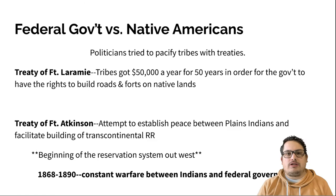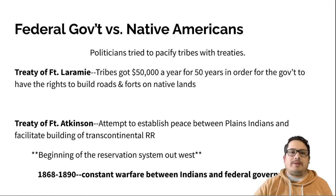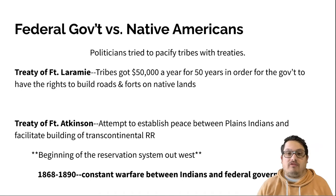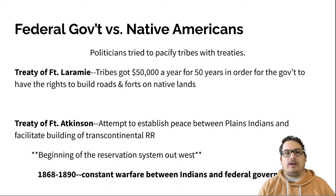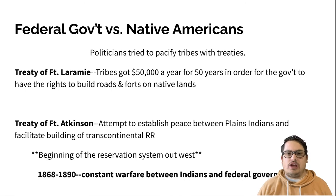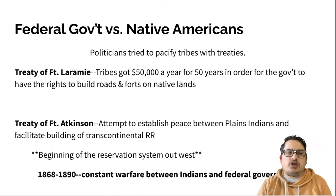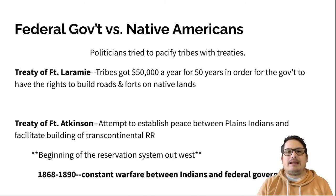A reservation system — and we have reservations here in North Carolina — is basically sovereign land given to those Native American tribes. The federal government can have some impact, like the FBI can go in to help with investigations, but local law enforcement of the surrounding area doesn't have jurisdiction. Tribal authorities have control over that sovereign land. And while we talk about these treaties, there is going to be essentially constant warfare between Native Americans and Americans — the Indian Wars from 1868 to 1890.